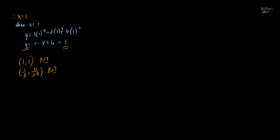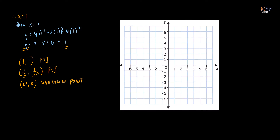So we have two points of inflection: one at (one-third, 11/27) and another at (1, 1). We also have a maximum point at the origin (0, 0). From here we can sketch the graph of the function. Note that we have no minimum point — only a maximum point and two points of inflection.